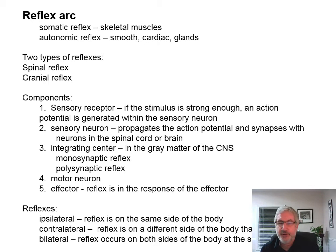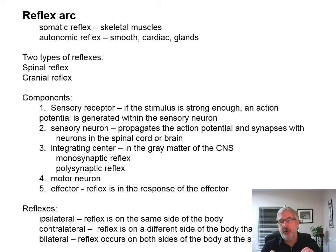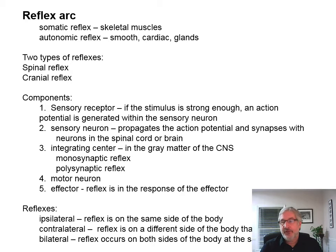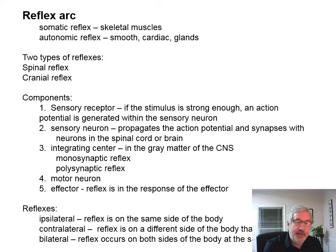The effector response is a reflex. If the stimulus is strong enough, an action potential is generated within the sensory neuron, which propagates and synapses with neurons in the spinal cord or the brain. The central nervous system — the spinal cord or the brain — is the integrating center. You can have either a monosynaptic reflex or a polysynaptic reflex. Then you have a motor neuron and an effector. Reflexes can also be ipsilateral, contralateral, or bilateral.